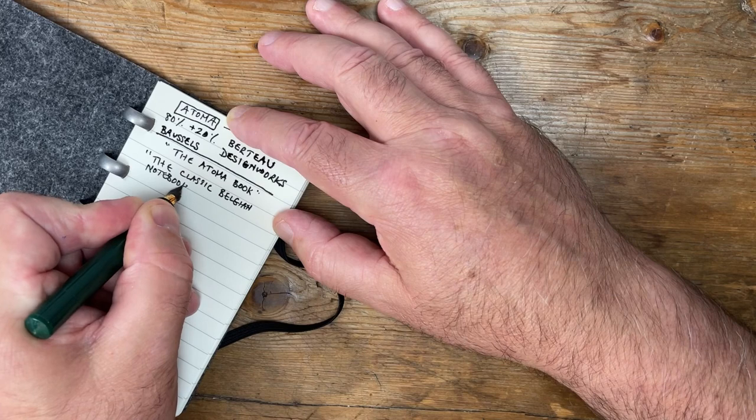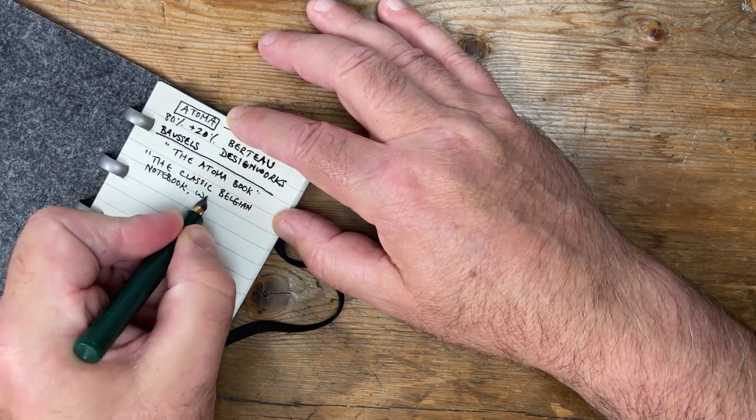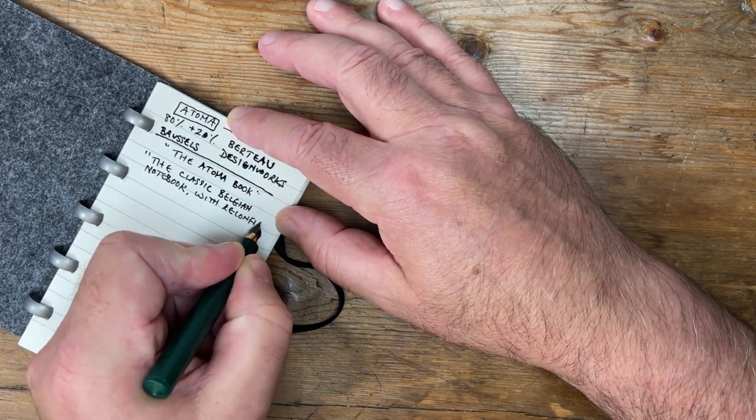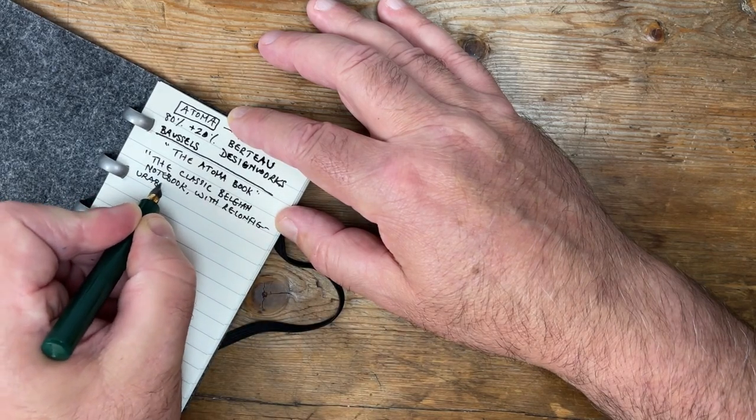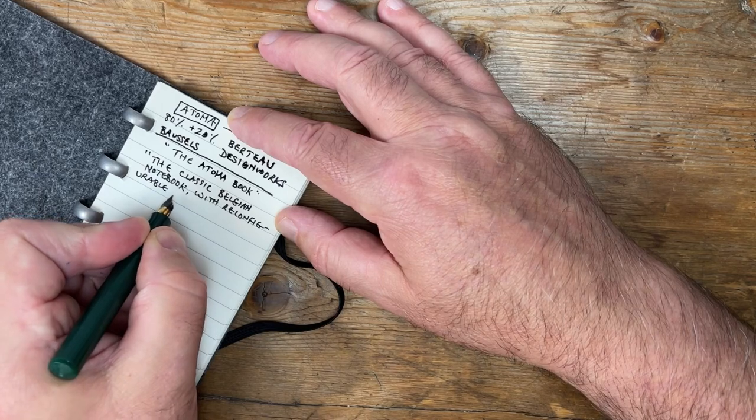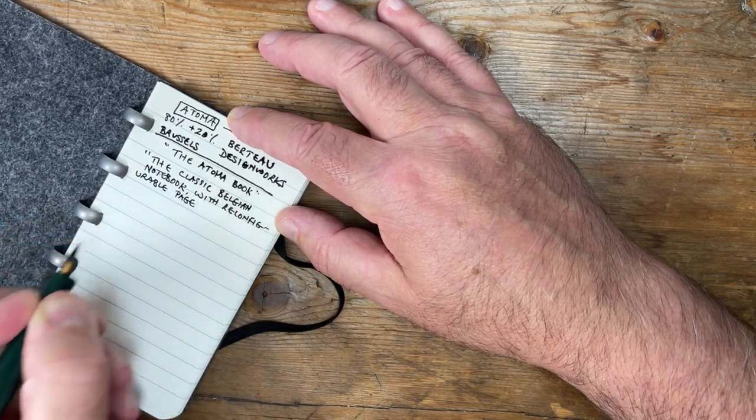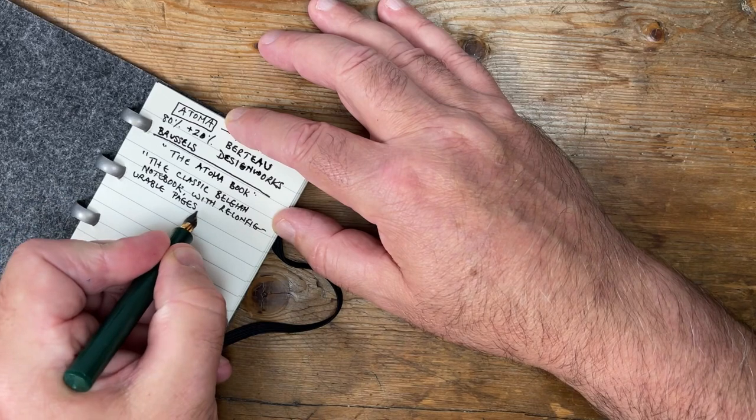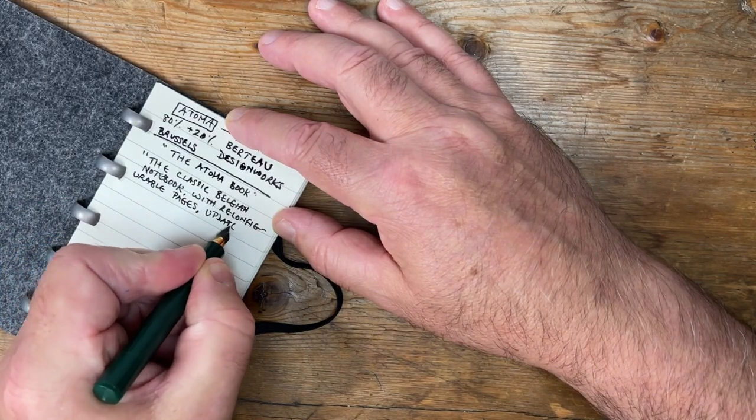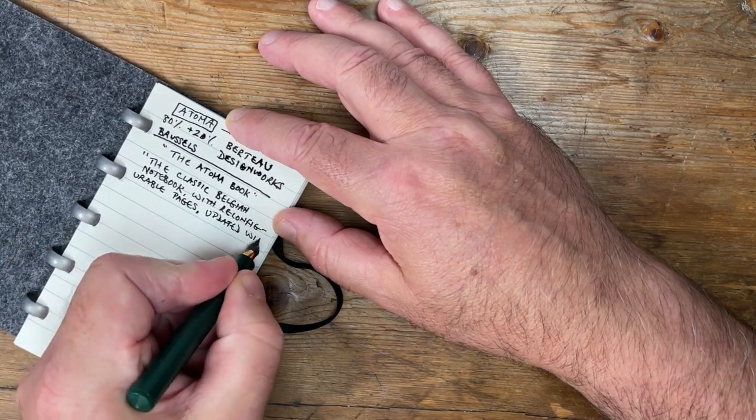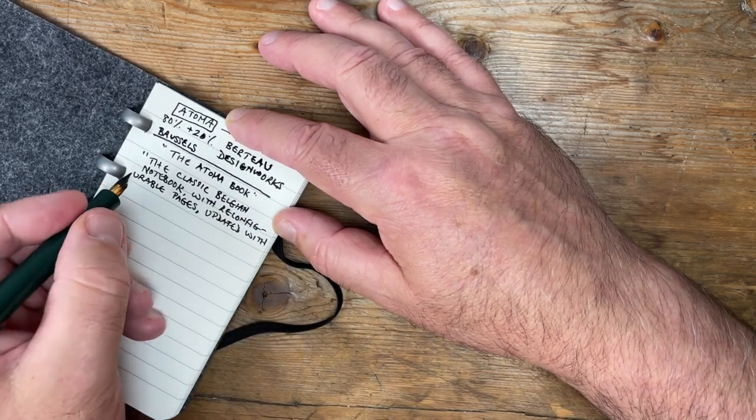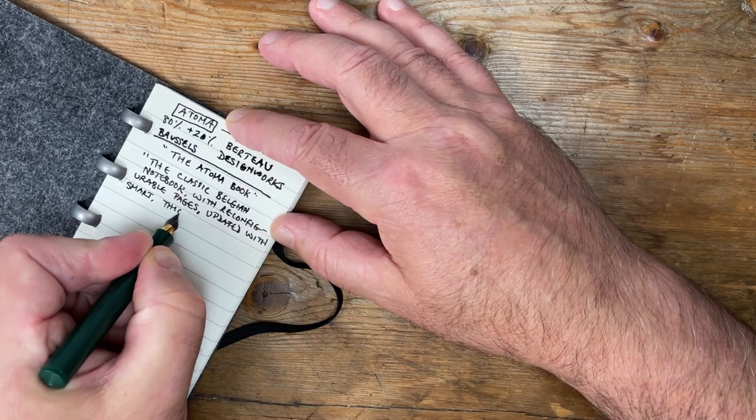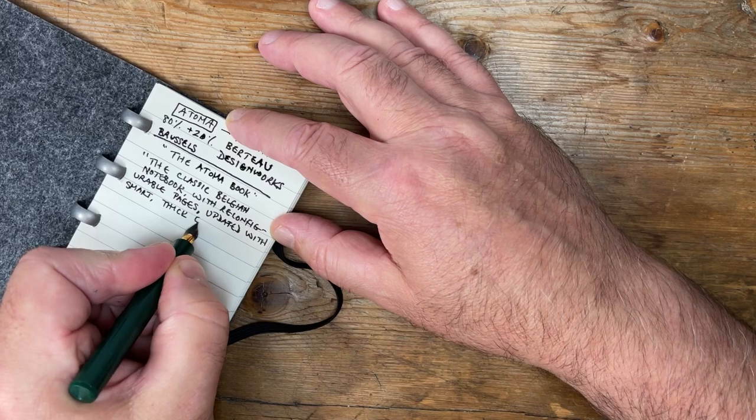But he describes this, in the blurb, as, and I'm going to write this down, long-winded, because it's quite an interesting thing. He says he describes it as the classic Belgian notes book. I wish I could write it faster, but we are where we are. With reconfigurable pages. Now that's what we all want, isn't it? Something with reconfigurable pages.